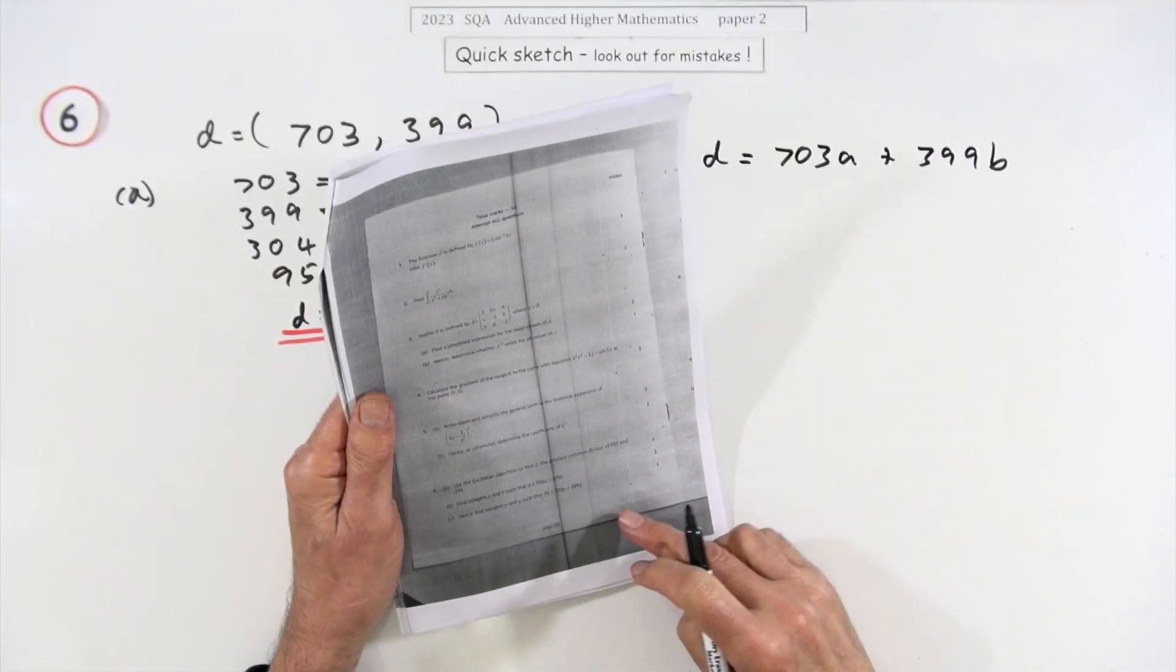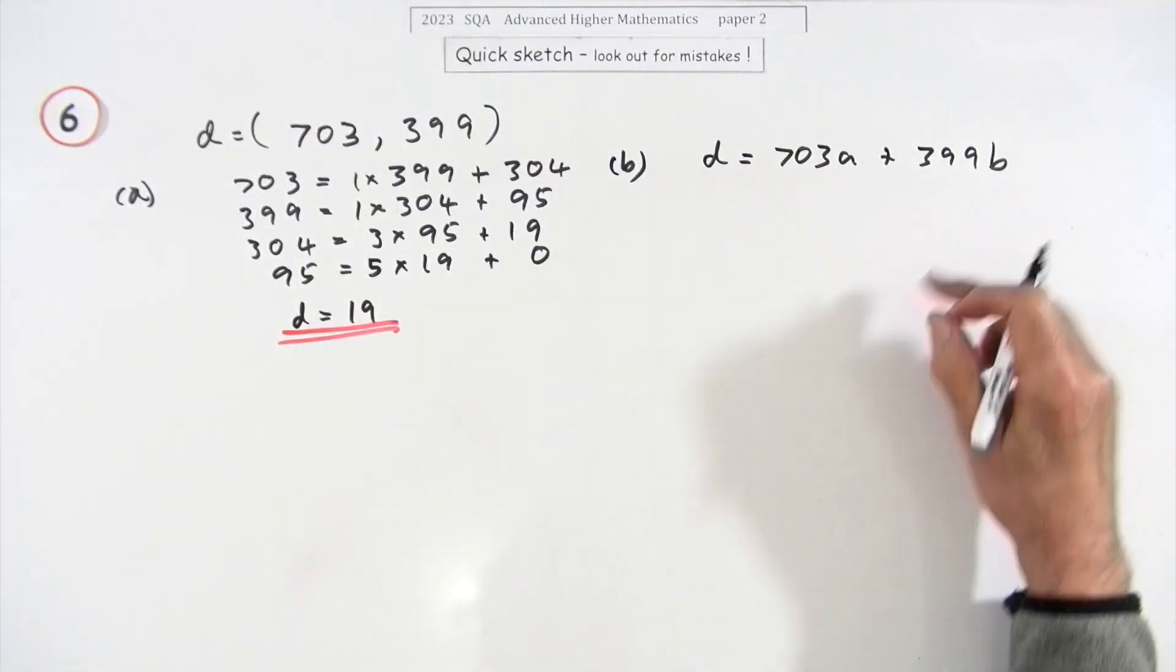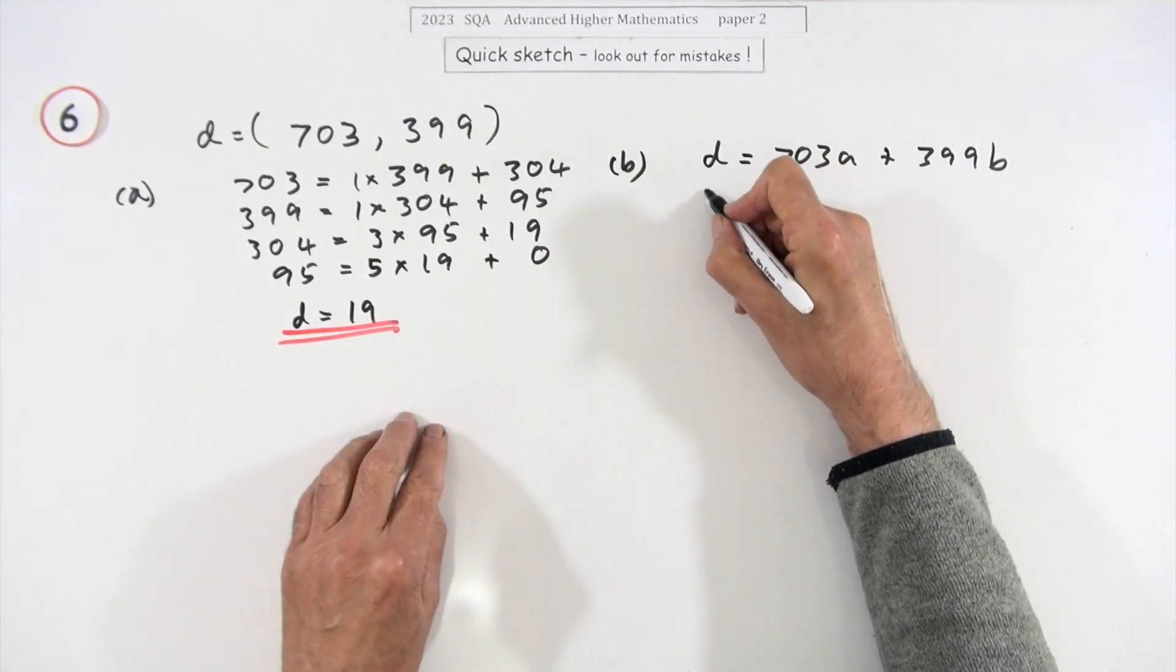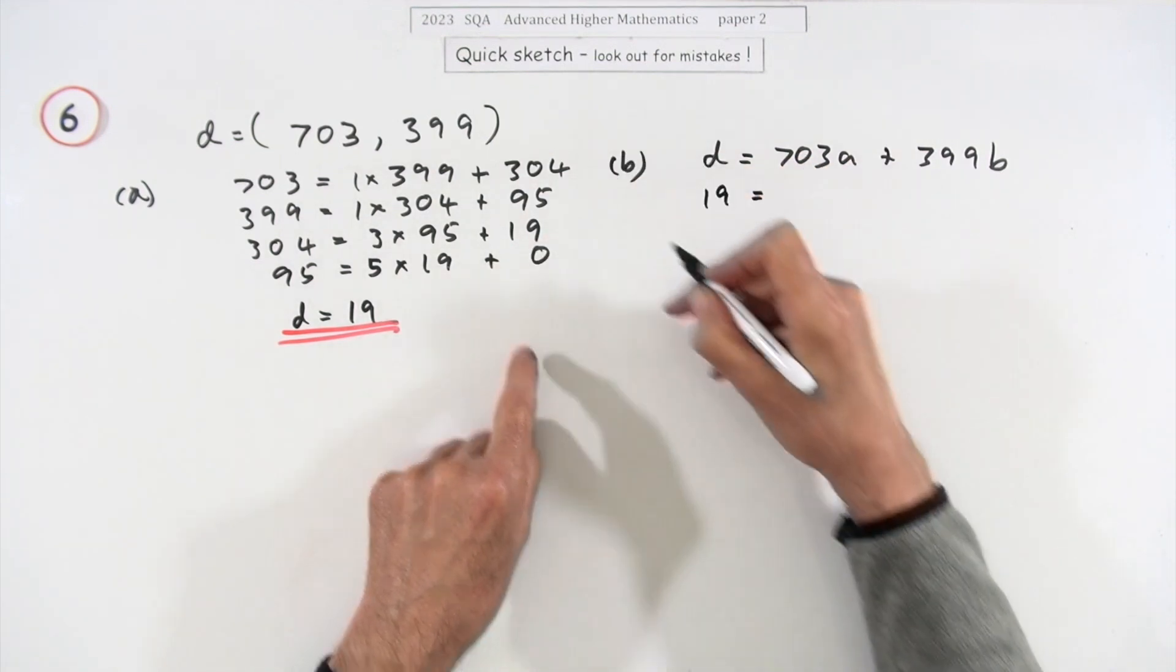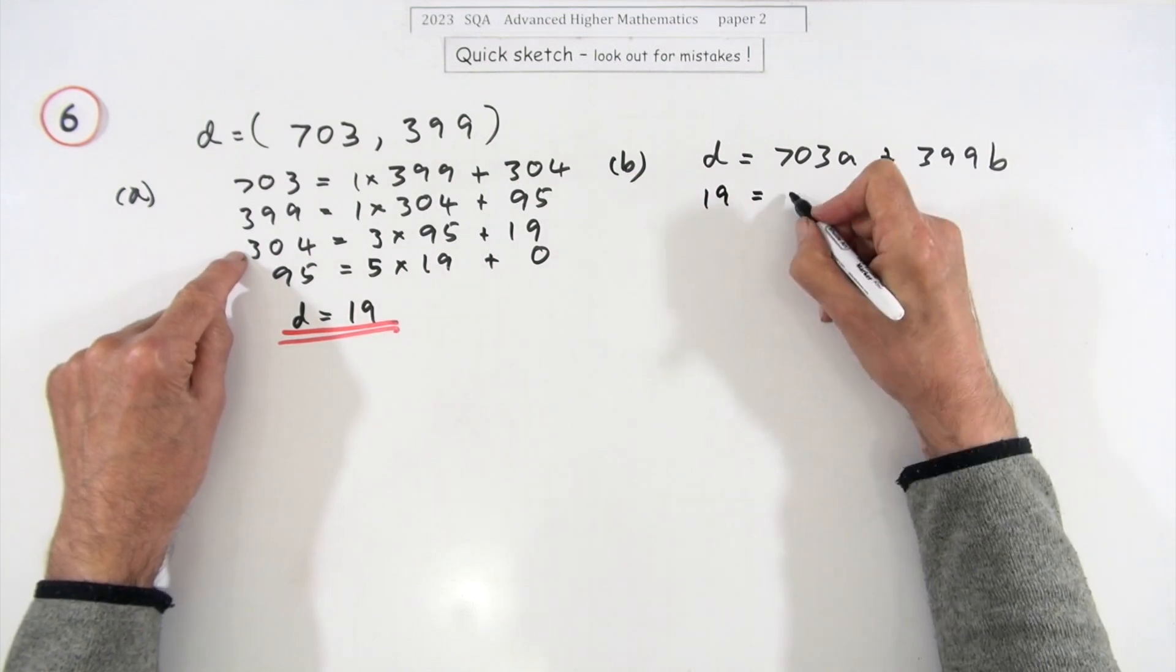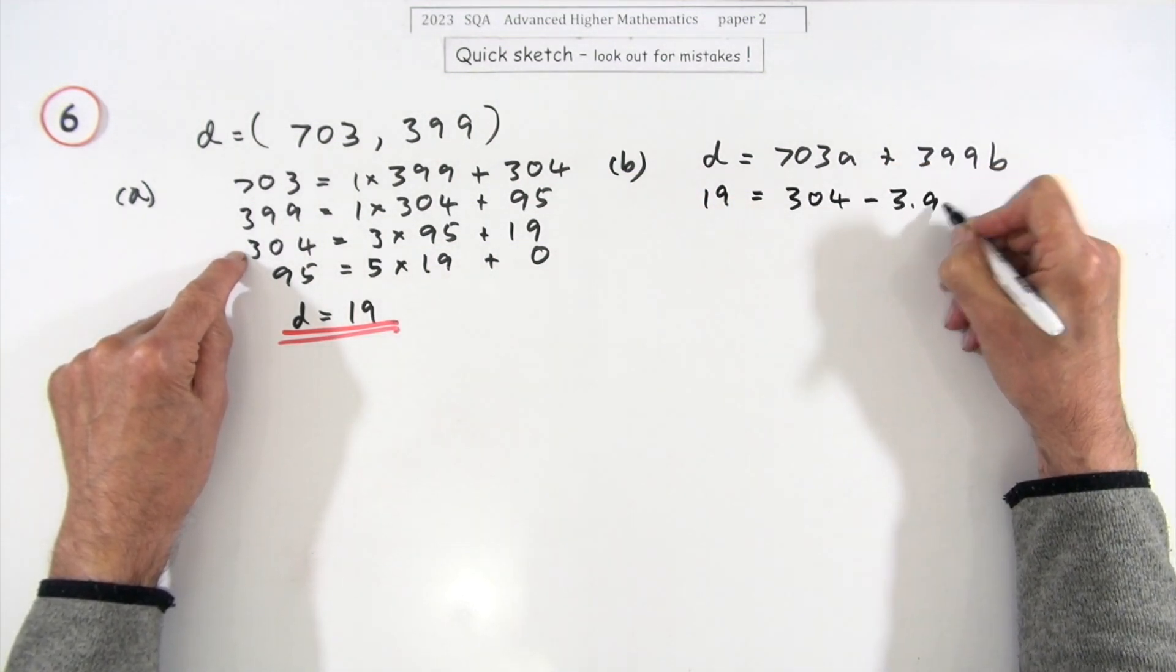Then part b for two marks, find integers a and b that would solve this equation, this Diophantine equation. Well d is that 19, well how can you make up that 19? You're going to start from here and walk your way back. So using the 19 row, 19 is the same as 304 take away three lots of 95.